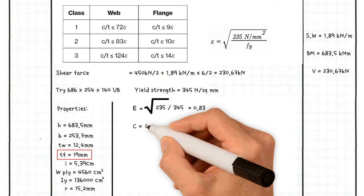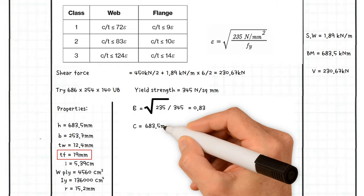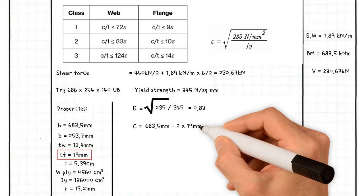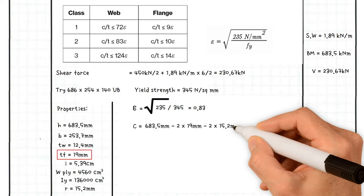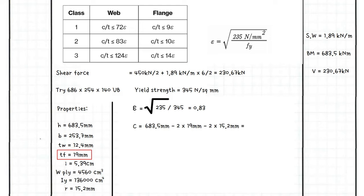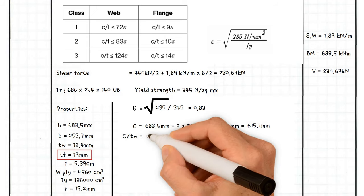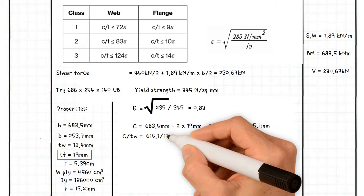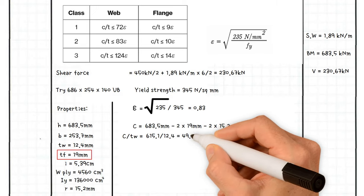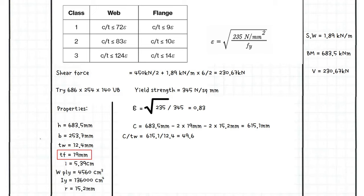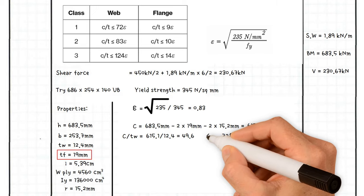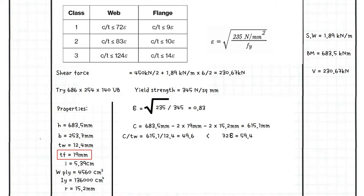Working out C web, which equals depth of the section minus 2 times the thickness of the flange minus 2 times the root radius 15.2 millimeters, this gives us a value of 615.1 millimeters. As a result, C over web thickness equals 615.1 millimeters over 12.4, which is 49.6. We compare this to 72 epsilon, which equals 59.4, which is greater than 49.6. Therefore, the section is plastic Class 1.